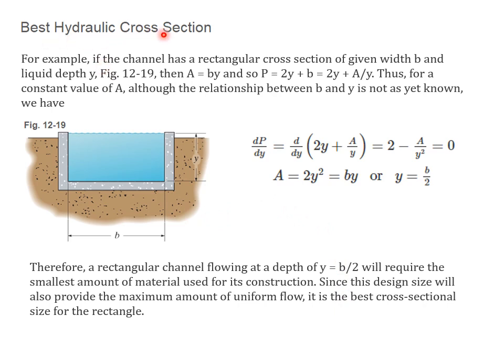Let's take a look at best hydraulic cross-section. Suppose that the channel has a rectangular cross-section given by width B and the liquid depth Y. Then the area is simply B times Y, and the perimeter is given by 2Y plus B. Notice we don't include this top part since this is just open surface. Thus, for a constant value of A, the relationship between B and Y is not yet known. We can take a derivative of dP with respect to Y and set this equal to 0. And if we do that, we find A is equal to 2Y squared, which is obviously B times Y, so Y is equal to B over 2.